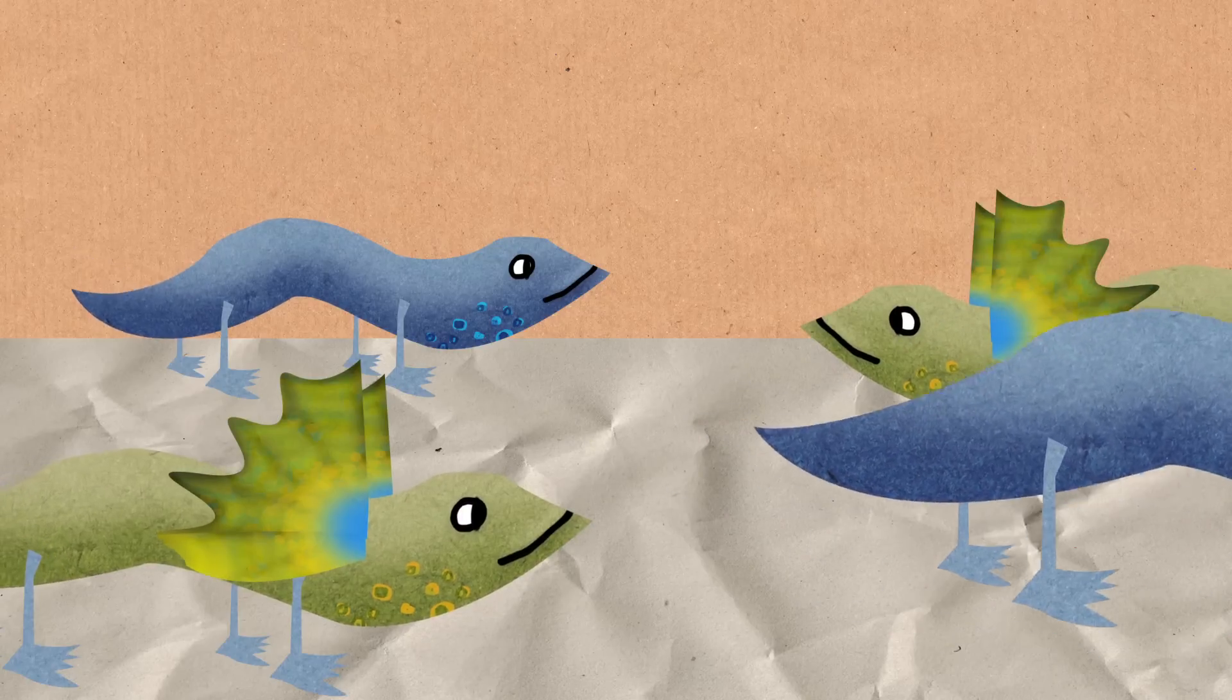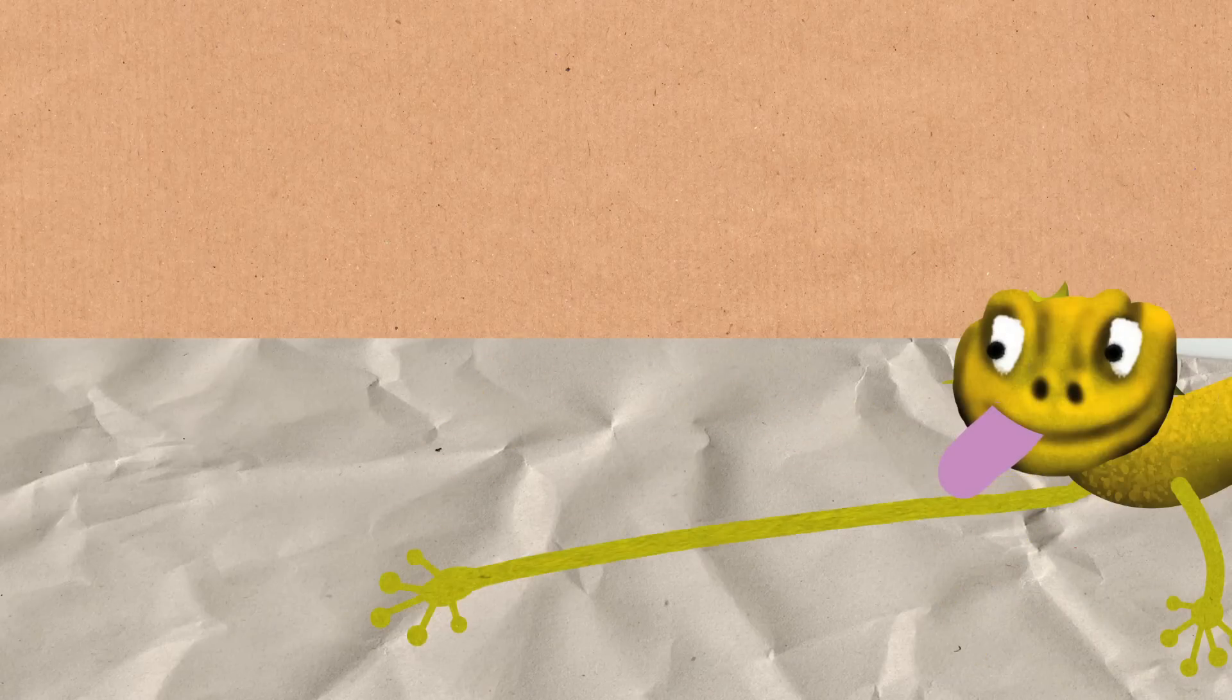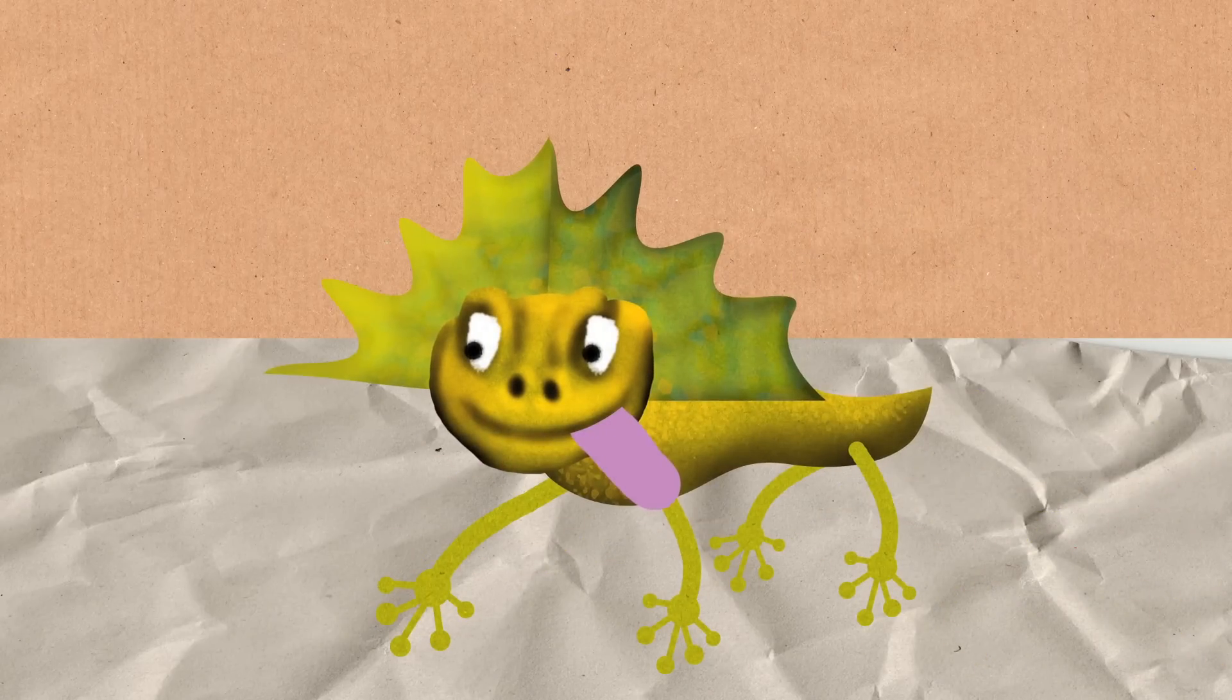And then the third type of lizard, yellow lizards, they're kind of roamers. They're called sneakers. So they don't have any territory of females of their own, but they can disguise themselves as a female and go in to attack one of the other territories.